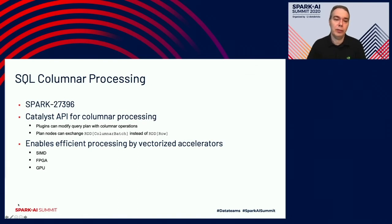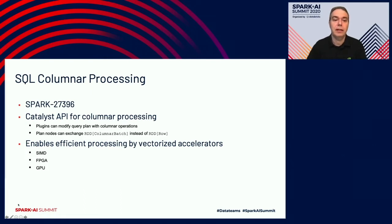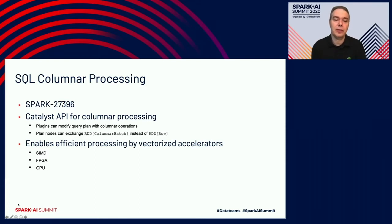I'd like to talk about SQL columnar processing, which is in Spark 3.0, covered by JIRA Spark 27396. This extends Catalyst — Spark's SQL engine — through a plugin interface to allow columnar processing by plugins. Plugins can modify the query plan with columnar operations, meaning plan nodes can exchange RDD of columnar batch instead of RDD of row. This columnar format enables efficient processing by vectorized accelerators such as SIMD units, FPGAs, and GPUs.